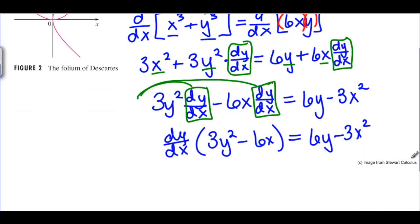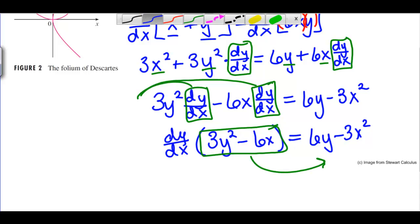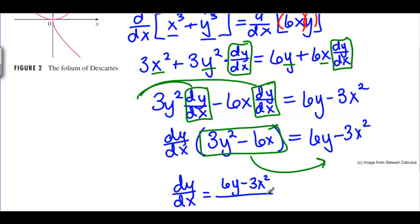Now that we have dy/dx times something we can take this term here and divide both sides by that term. We're going to end up with dy/dx equals 6y minus 3x squared divided by 3y squared minus 6x.